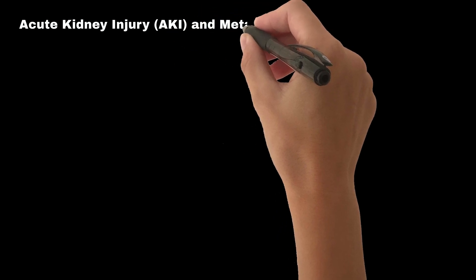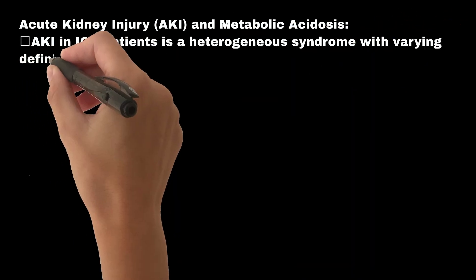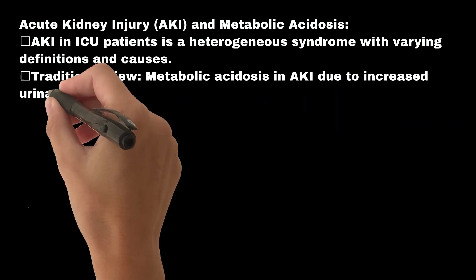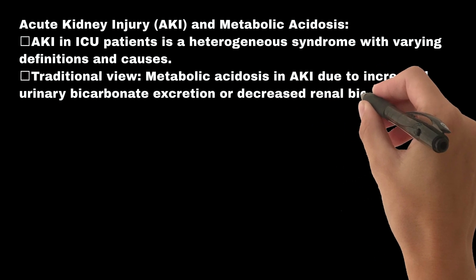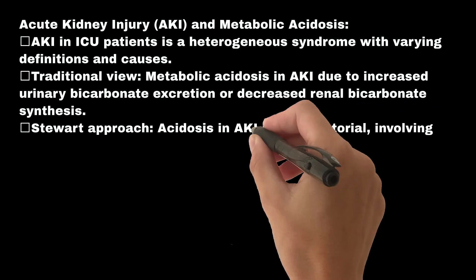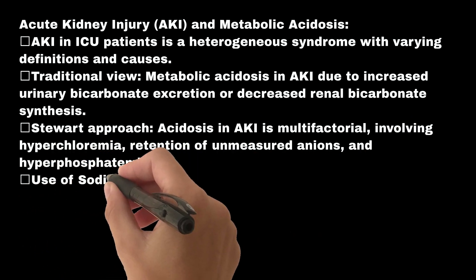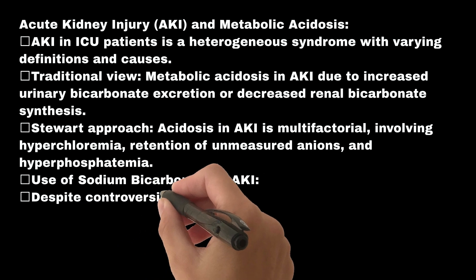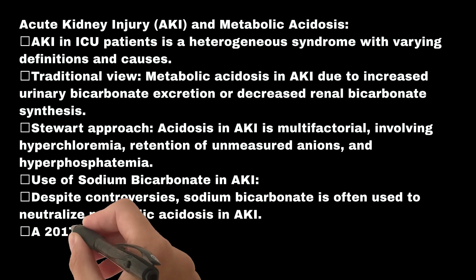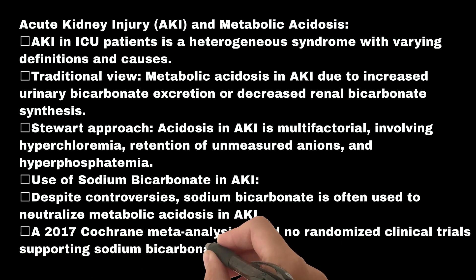Acute kidney injury (AKI) and metabolic acidosis: AKI in ICU patients is a heterogeneous syndrome with varying definitions and causes. The traditional view attributes metabolic acidosis in AKI to increased urinary bicarbonate excretion or decreased renal bicarbonate synthesis. The Stewart approach identifies AKI acidosis as multifactorial, involving hyperchloremia, retention of unmeasured anions, and hyperphosphatemia. Despite controversies, sodium bicarbonate is often used to neutralize metabolic acidosis in AKI; however, a 2017 Cochrane meta-analysis found no randomized clinical trials supporting its use.